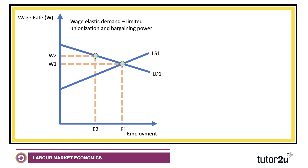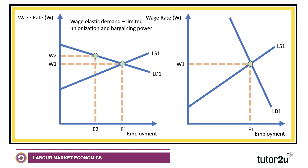In contrast, on the right-hand side, the labour demand curve is drawn as inelastic, so the employer is less likely to shed labour if wage costs go up. At W1, the unions might be able to negotiate quite a high wage, W2. They lose some employment, but not as much. That big area above W1 to W2 is the extra income — the earnings — that union employees might be able to negotiate. So typically, unions are in a stronger bargaining position when labour demand is relatively inelastic.